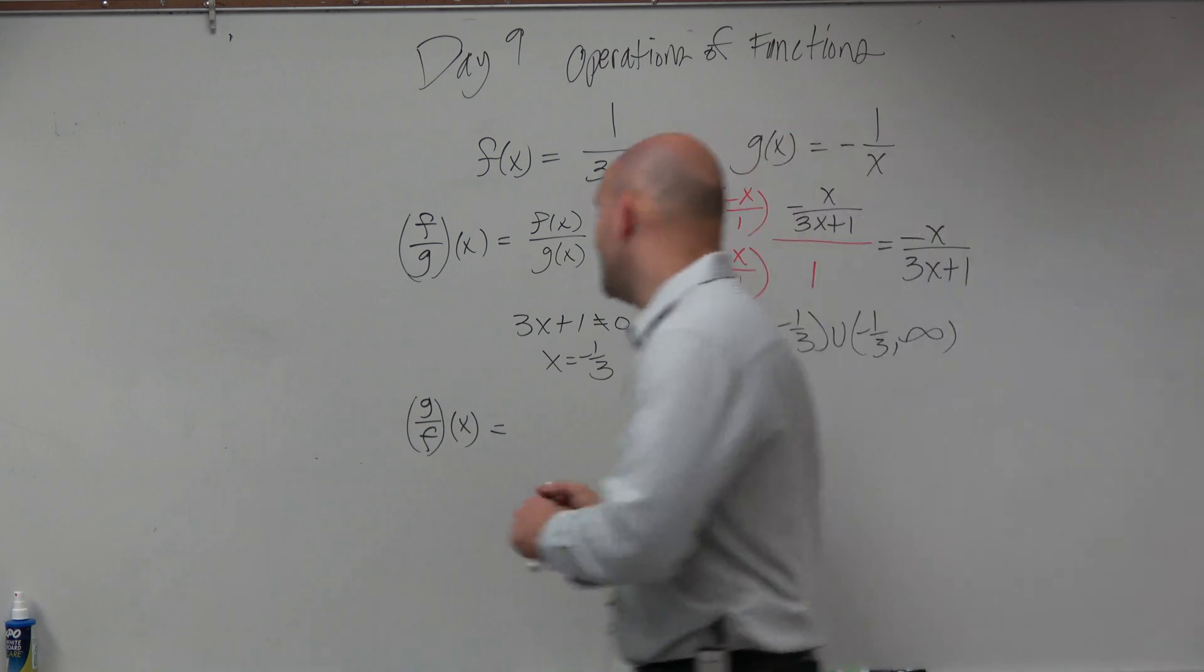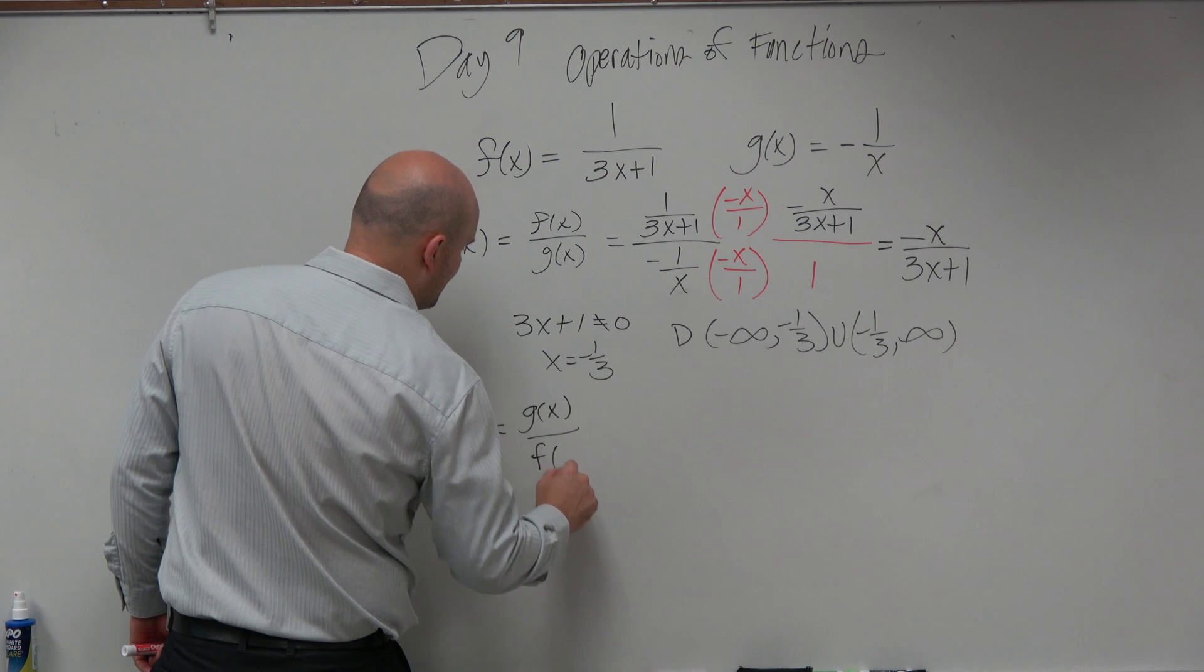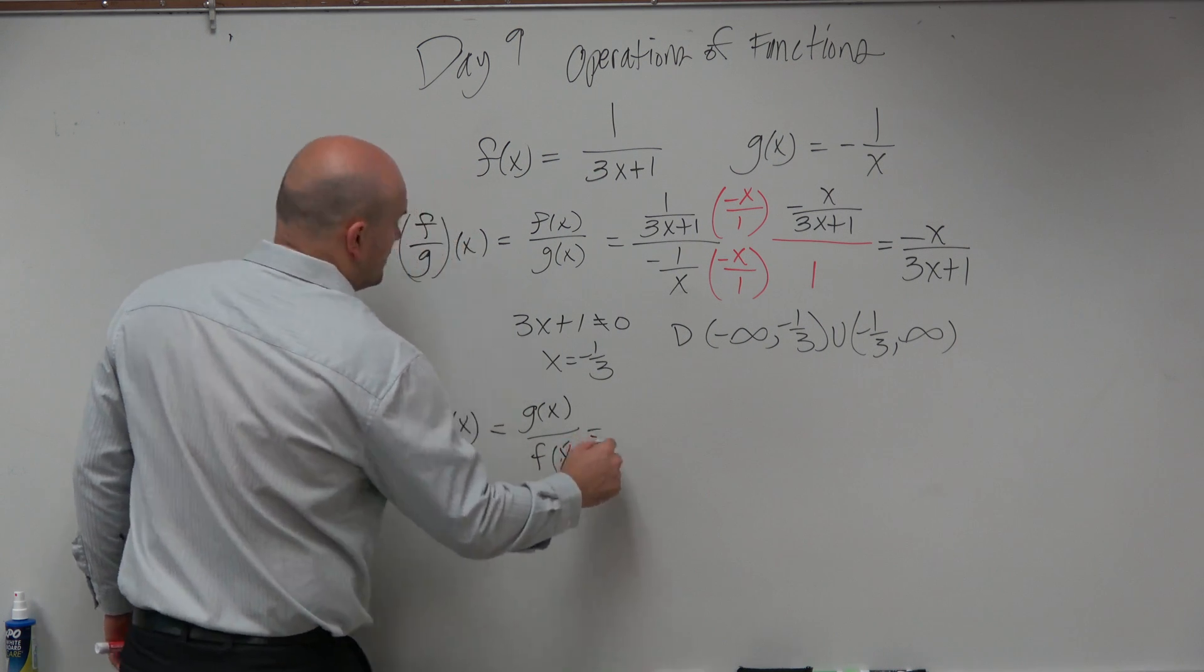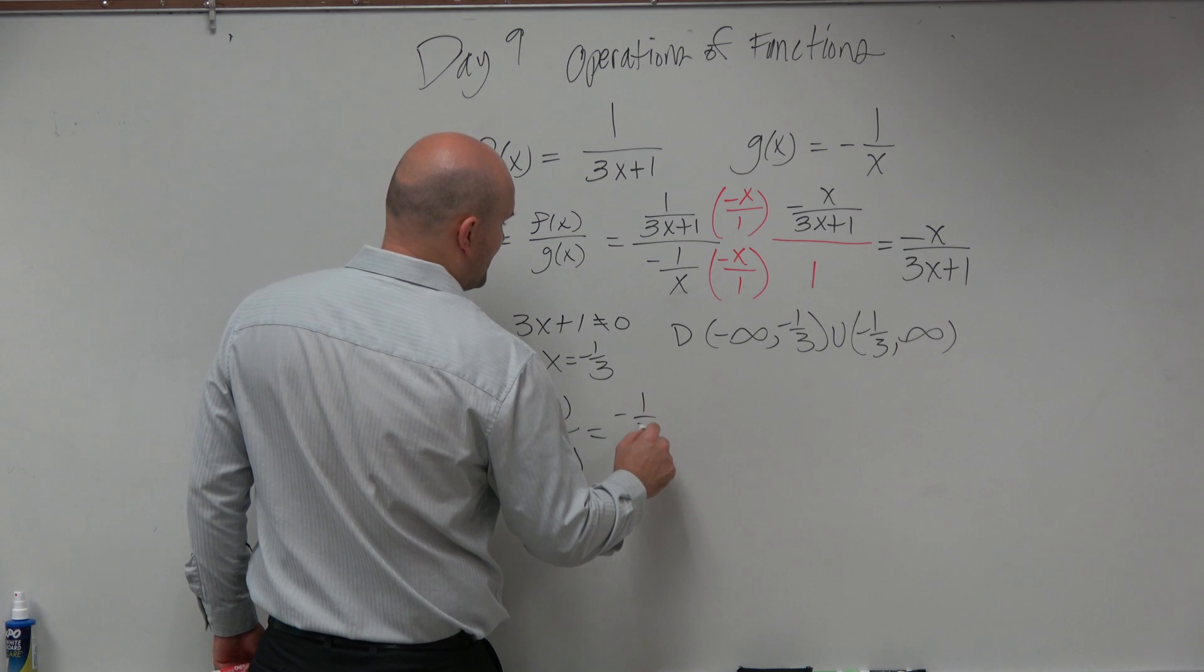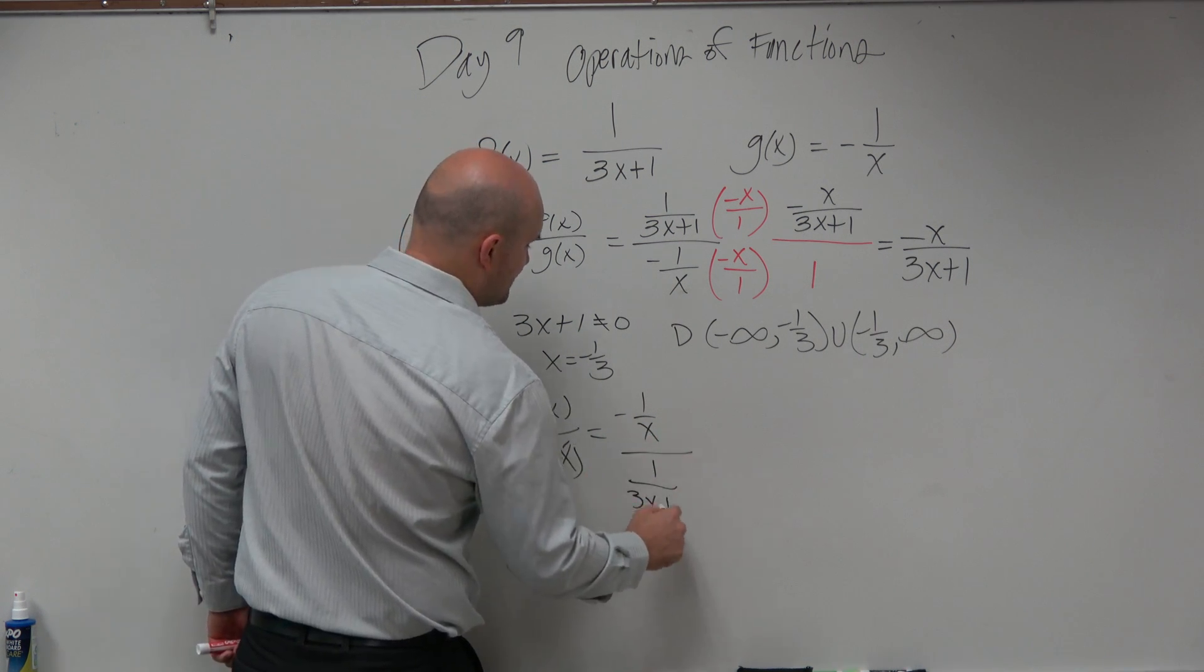All right, now let's go and look at g of x over f of x. That's going to be the same thing, g of x over f of x. So we're going to take g of x, which is negative 1 over x, all over f of x, which is 1 over 3x plus 1.